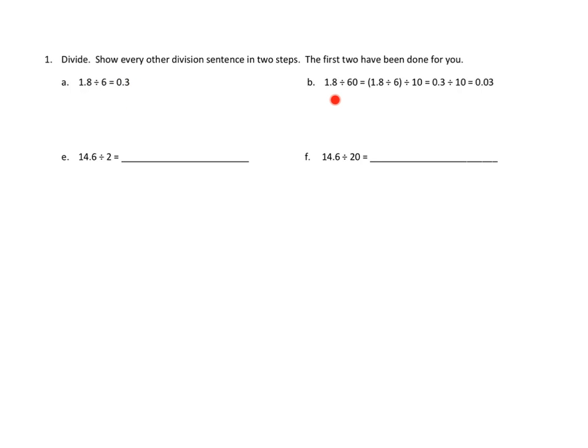Then they look at this problem, 1.8 divided by 60. It's a very similar problem. 1.8, we start with the same whole. Instead of dividing by 6, we divide by 60. I see what they've done here. They've said this is the same problem as 1.8 divided by 6, divided by 10, because we just take this 60 and we break it into two pieces, divided by 6, divided by 10. We know we've already done this problem. 1.8 divided by 6 is 0.3, or 3 tenths. So we just need to do that divided by this remaining 10, and that gives us our answer of 3 hundredths. This does make sense.